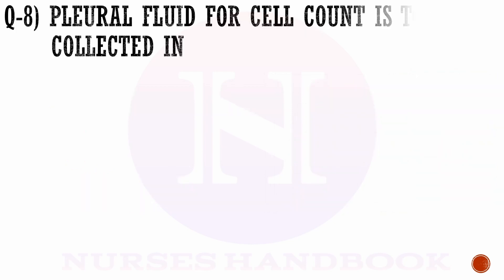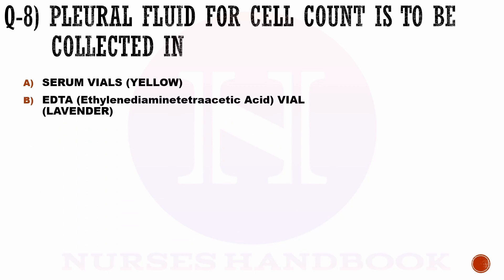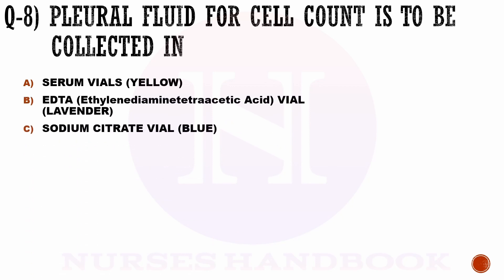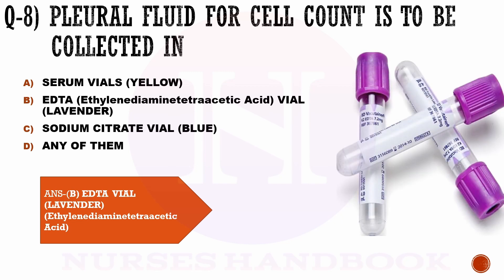Question number 8. Pleural fluid for cell count is to be collected in: a) serum vials, yellow in color, b) EDTA vials, that is lavender in color, c) sodium citrate vial, blue in color, and d) any of them. The correct answer is b, EDTA vial, which is lavender in color.